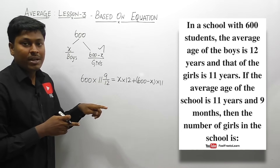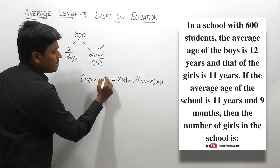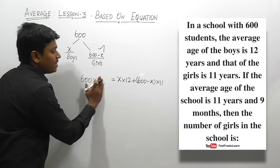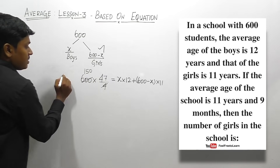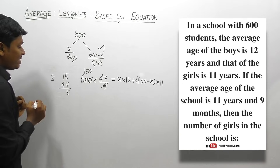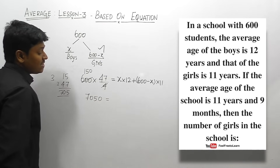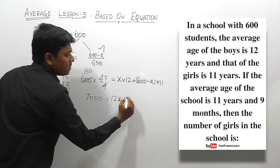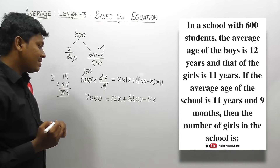So 600 into 47/4 equals 150 into 47, which is 7,050. This equals 12x plus 11 into (600 minus x), giving 12x plus 6,600 minus 11x. So 7,050 minus 6,600 equals 450, and 450 equals 12x minus 11x, giving x equals 450.